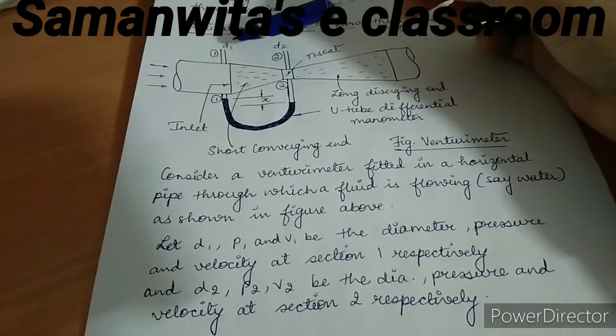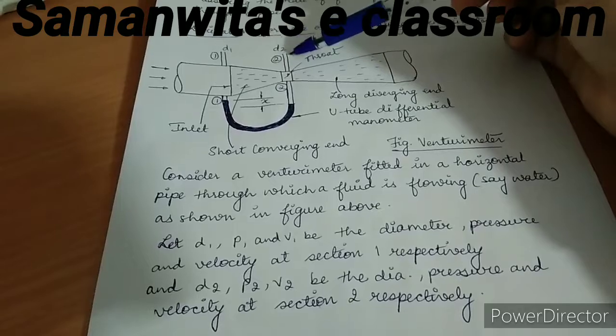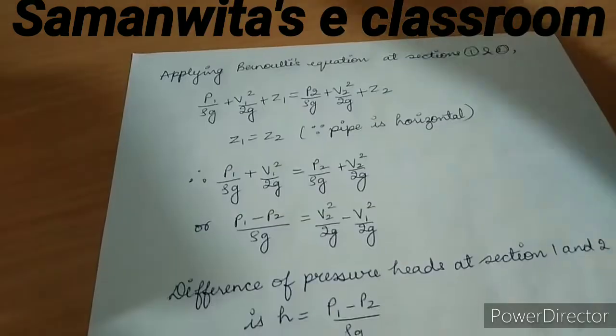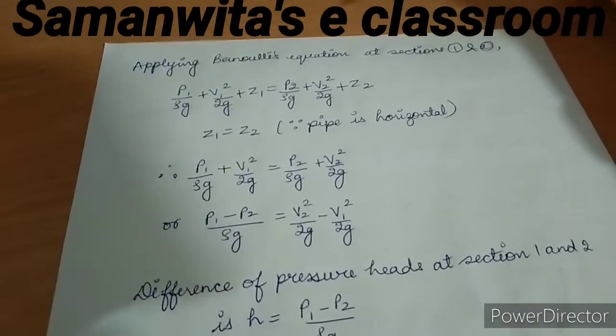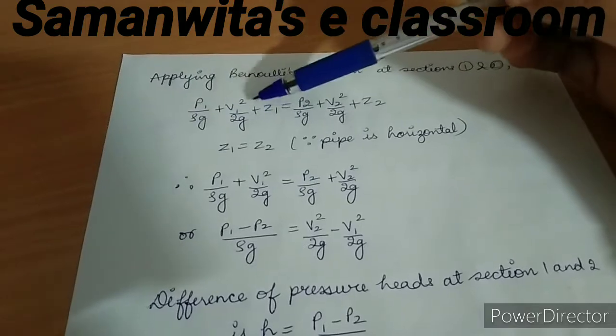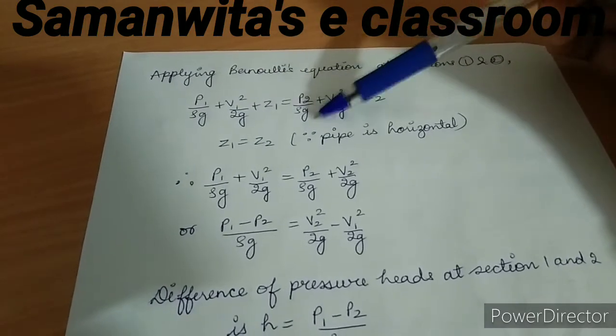The diameter over here is d1, the pressure is p1, velocity is v1. At this section the diameter will be d2, velocity will be v2, and pressure will be p2. If you apply Bernoulli's equation between sections 1 and 2, the equation will be p1/ρg + v1²/2g + z1 = p2/ρg + v2²/2g + z2.